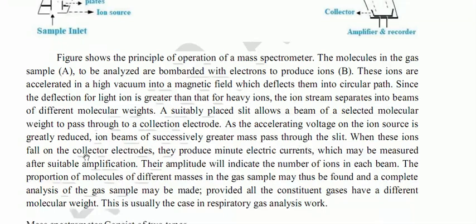When these ions fall on the collector electrode, they produce a minor electric current which may be measured after suitable amplification. The amplitude indicates the number of ions in each beam. The proportion of molecules of different masses in the gas sample may be found, allowing a complete analysis of the gas sample, provided all the constituent gases have different molecular weights.